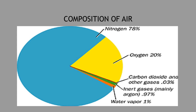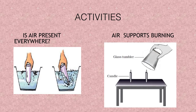Air is a mixture of different gases. It consists of 78% nitrogen — plants and animals need nitrogen to grow. Oxygen present in air is 20% and is used by all living things to respire; it also helps in burning. Carbon dioxide comprises 0.03% and is used by green plants for the process of photosynthesis. Apart from this, water vapor, dust, and smoke are also present in air.